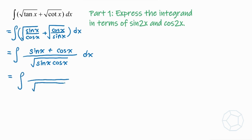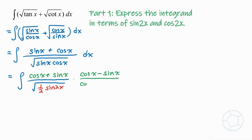Next, in the denominator we'll use the double angle formula, which gives half sine 2x. For the numerator, let's rearrange the two terms as cosine x plus sine x — this is in the form a plus b. Let's multiply by a minus b, that means cosine x minus sine x. Of course, we also divide by the same term so that the integrand is unchanged, with dx at the back.